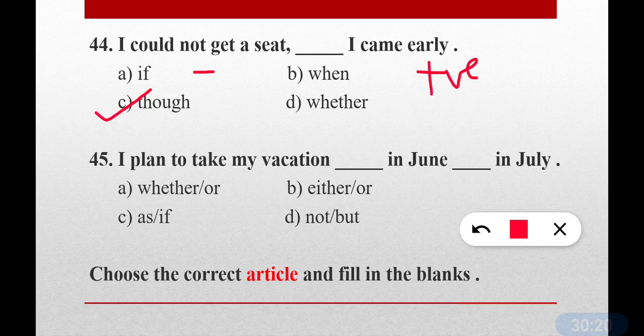Question number forty-five: I plan to take my vacation dash in June dash in July. The correct answer is option B — either in June or in July. I've planned vacations either in June or in July. 'Not...but' doesn't fit here because we use 'not only...but also' as a pair. Since that structure isn't complete, 'either...or' is correct.